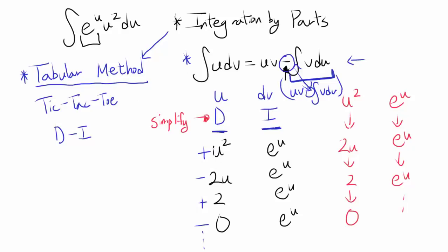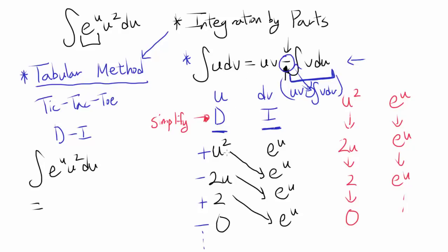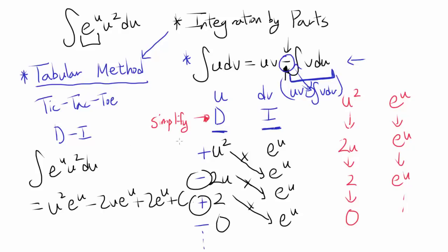You go down diagonally and multiply. So our answer for the integral of e to the u times u squared du is: u squared times e to the u, minus 2u times e to the u, plus 2 times e to the u, plus C. Notice how quickly this can be done — once you get used to it, all you do is list the part to differentiate, list the part to integrate, differentiate it, integrate it, go diagonally, multiply them out with alternating signs, and you're done.